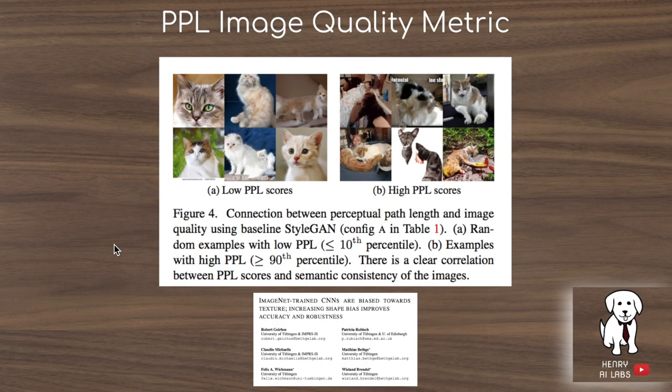The authors argue for the use of the perceptual path length image quality metric compared to things like the FID score or precision and recall. One interesting paper they cite is 'ImageNet-trained CNNs are biased towards texture: Increasing shape bias improves accuracy and robustness.' A shortcoming of automated GAN quality metrics like FID, inception score, or precision-recall is that they're using pre-trained image classifiers biased towards texture detection rather than shape detection.